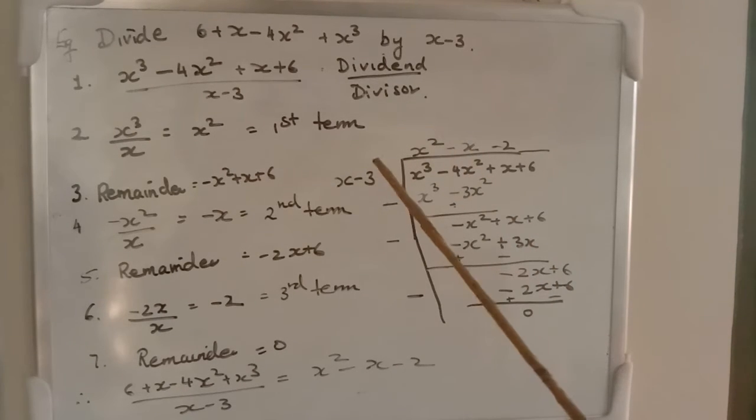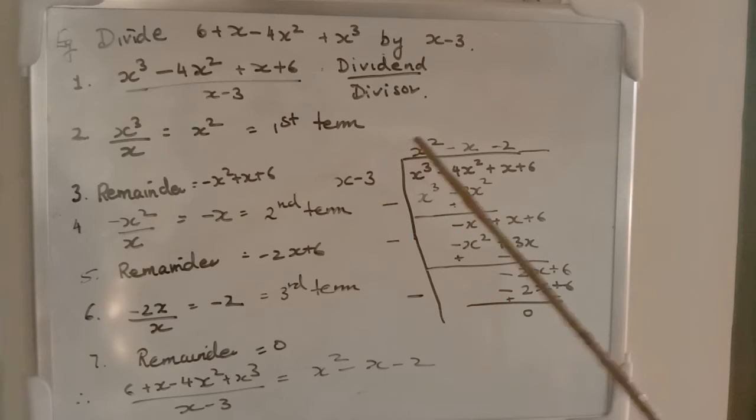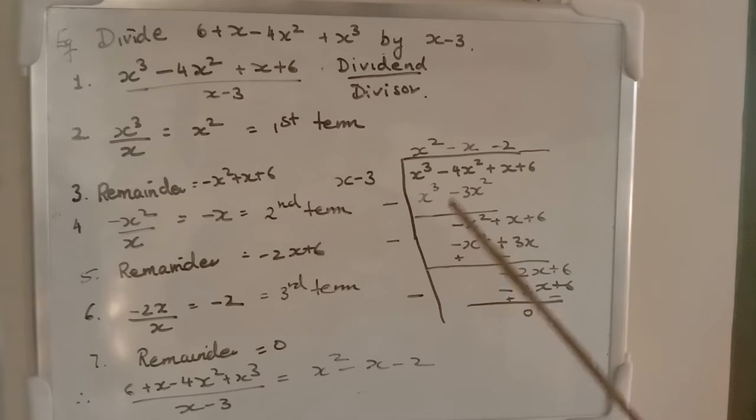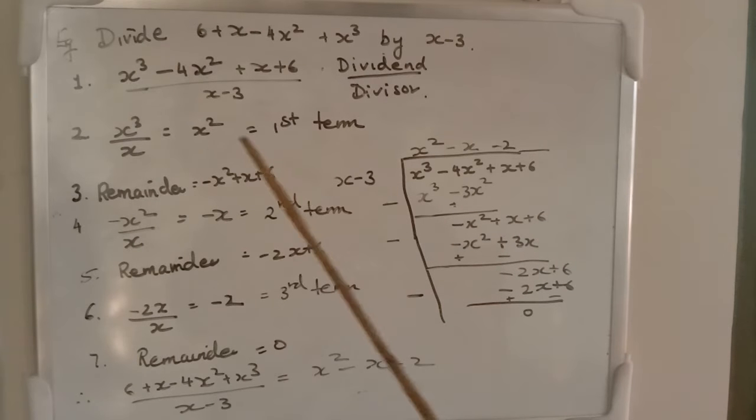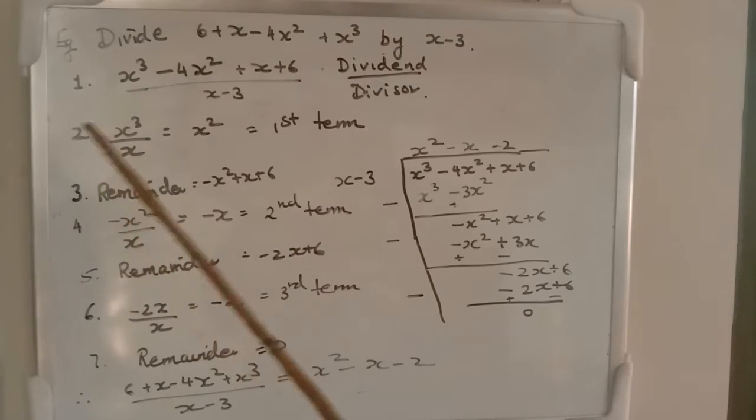Then you multiply into the divisor. x² into x, x³ and x² into -3, -3x². You subtract it, get the remainder. What's the remainder? This will be cut. You get -x² + x + 6. This is the remainder in step 3.